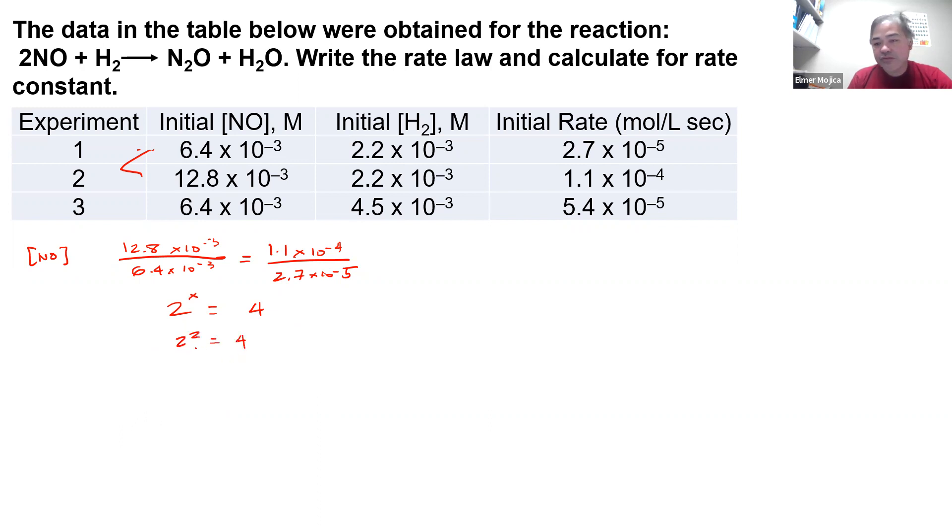And then I can repeat the process but this time for H₂. So I'm going to use these two experiments because that's the one where the concentration is changing. So 4.5 times 10 to the negative 3 over 2.2 times 10 to the negative 3, and I put the corresponding initial rate, 5.4 times 10 to the negative 5 over 2.7 times 10 to the negative 5. So I have here a 2 then a 2, so I can assign y for this thing.